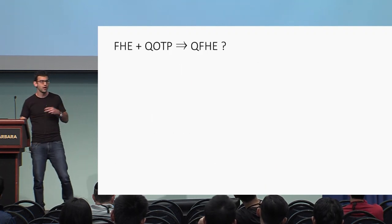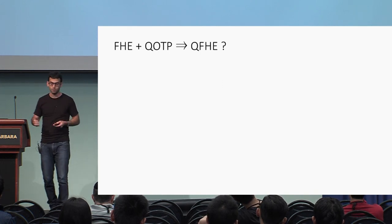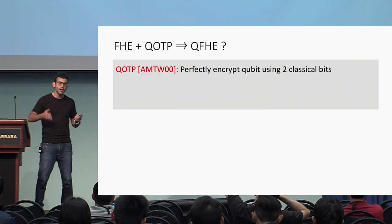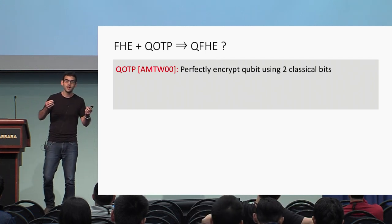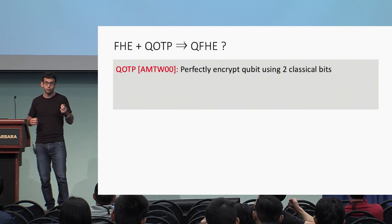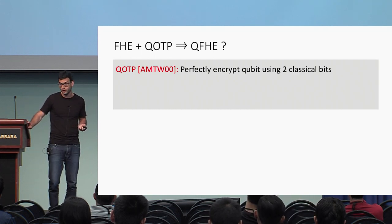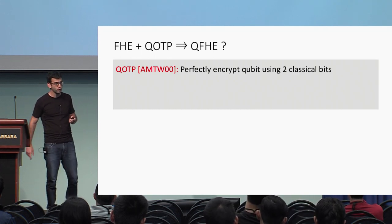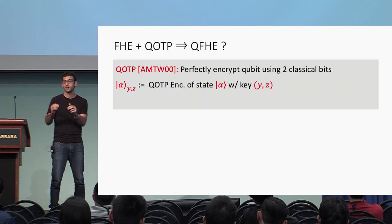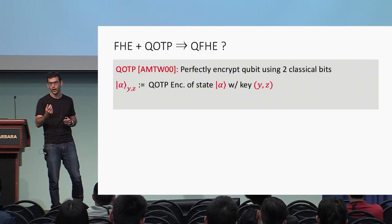Let's see how to use fully homomorphic encryption together with the quantum one-time pad to get quantum fully homomorphic encryption. The quantum one-time pad was presented by Ambainis et al., and it allows encrypting a quantum state using a classical key — a sequence of classical bits — with perfect security. To perfectly encrypt a single qubit, all you need is two random classical bits. We'll denote α_{y,z} as the quantum one-time pad encryption of the state α using pad bits y and z.